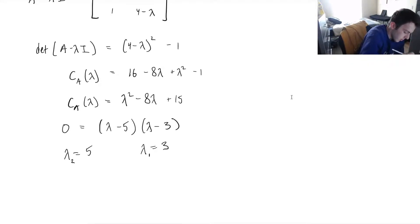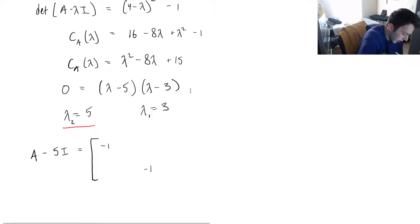So let's take a look at this. Let's start with lambda 2, which is 5. So if I'm going to compute A minus 5I now, this will be 4 minus 5 in each of my diagonals, which is negative 1 and negative 1. So this matrix here, we've got negative 1, negative 1, and this is what we have.